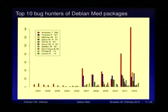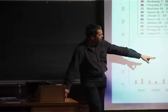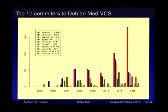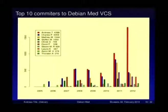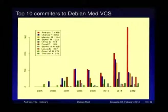The same effect appears in the bug hunter graph — who fixed bugs on Debian Med relevant packages. The same pattern: five years of nothing, then more people coming, and from 2011–2012 more people again. Here you see the commits to the Debian Med VCS. We started in 2005 with SVN, and added Git in 2010. Here you also see this increase. Does anybody have an idea why these two years show this increase?